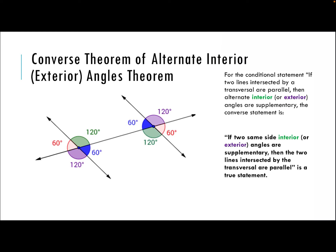The last two converse theorems are for alternate interior or alternate exterior angles. If two alternate exterior angles or alternate interior angles are congruent, then the two lines intersected by the transversal are parallel. We'll call this line M, line P, and our transversal T. We have a pair of alternate interior angles and a pair of alternate exterior angles. Because those pairs of angles are congruent, we know that line M is parallel to line P.